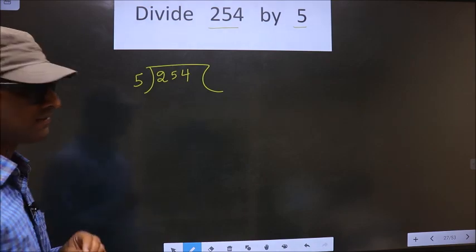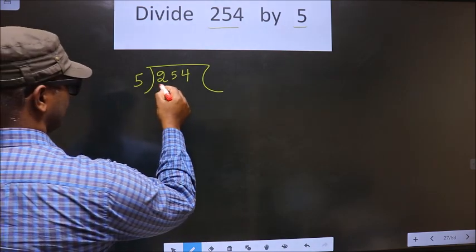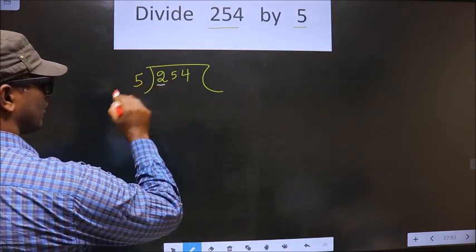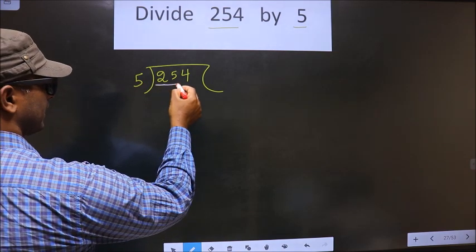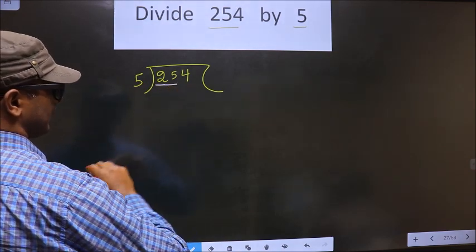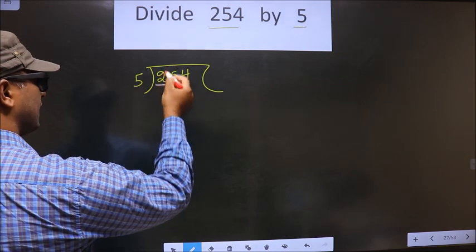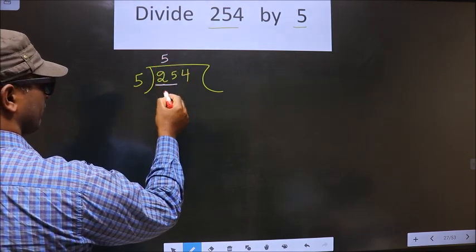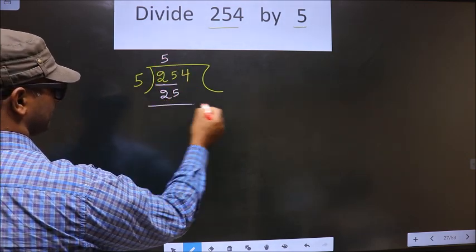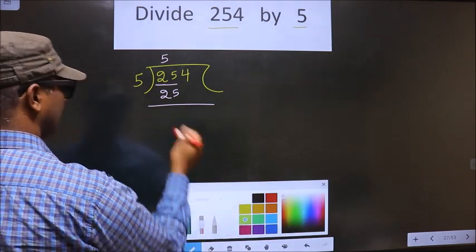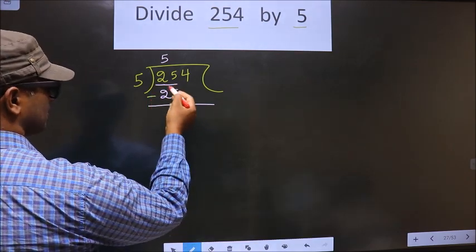Now here we have 2. 2 is smaller than 5, so we should take two numbers, that is 25. When do we get 25 in five table? 5 fives 25. Now you should subtract these two. So 25 minus 25 is 0.